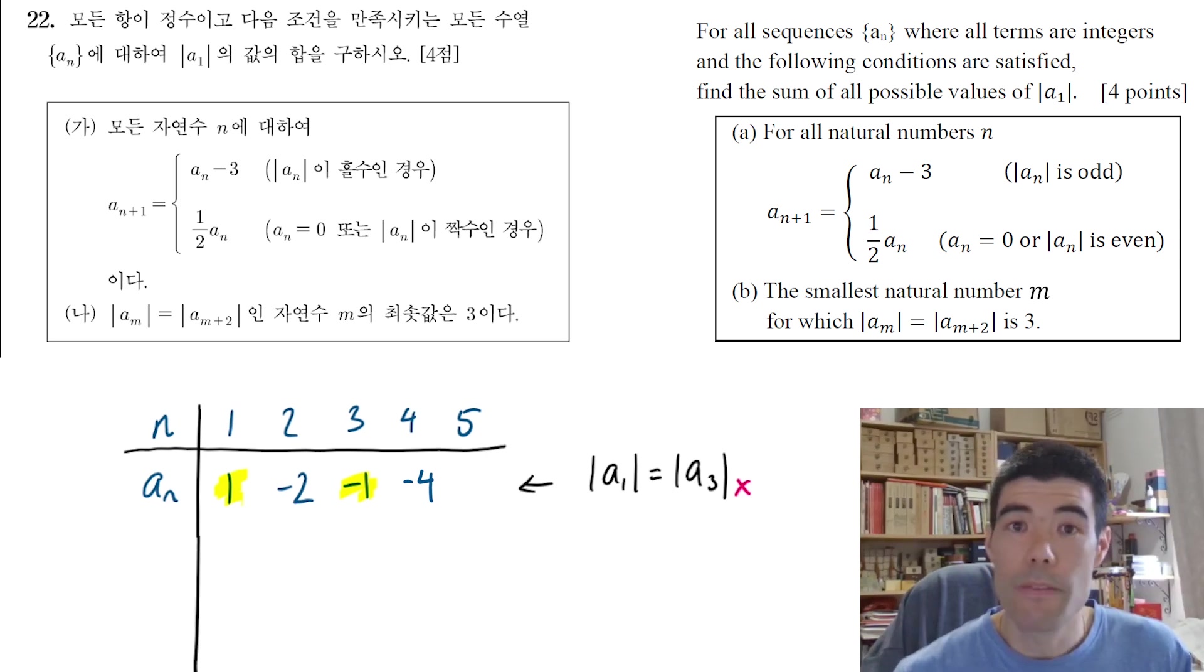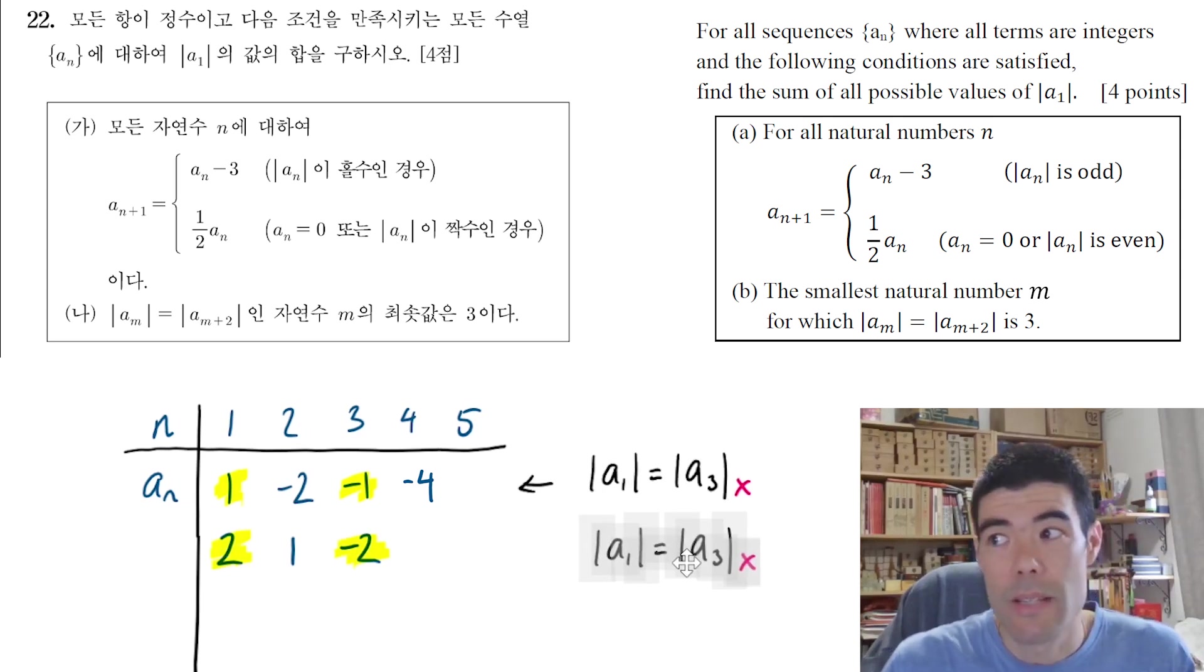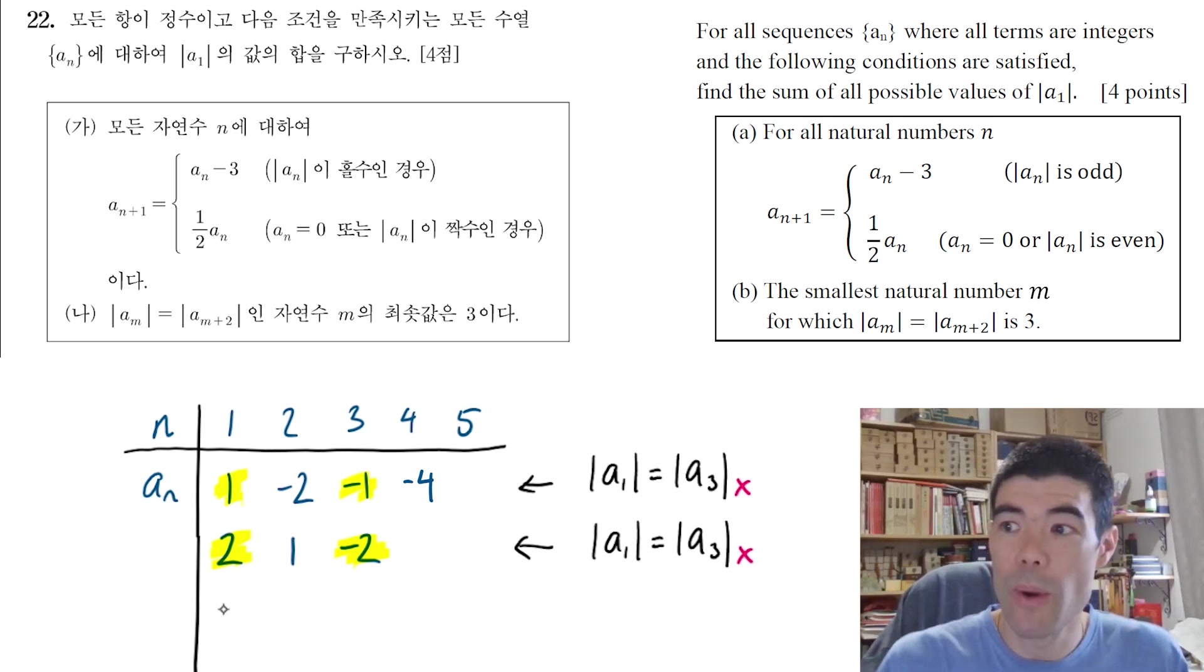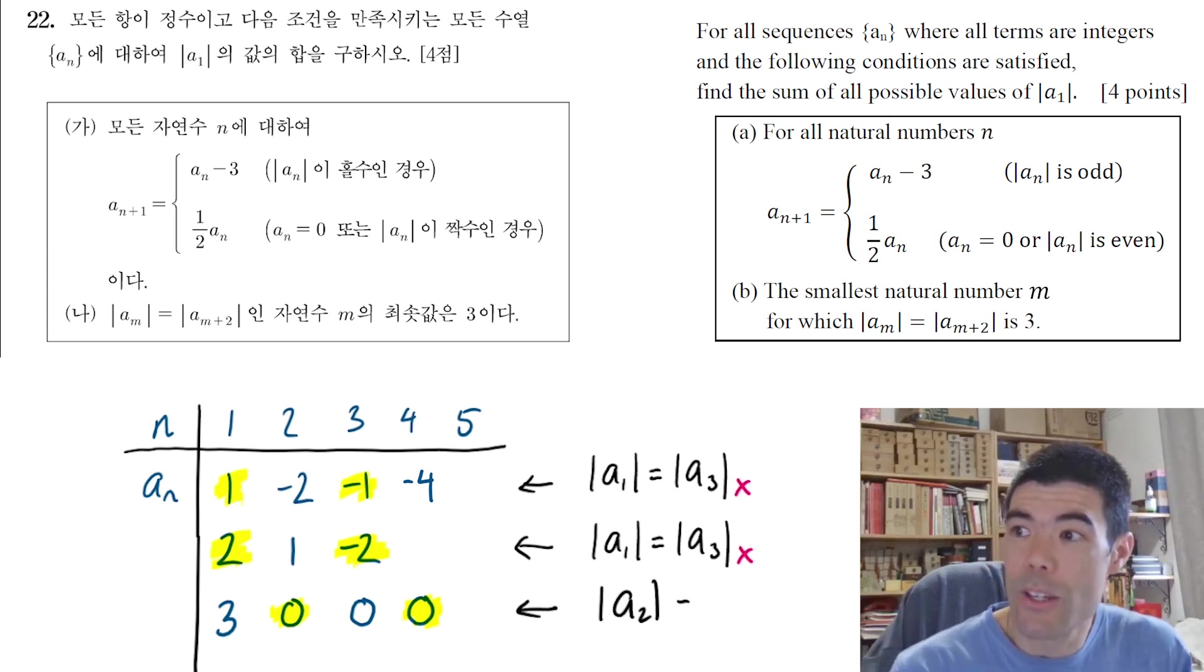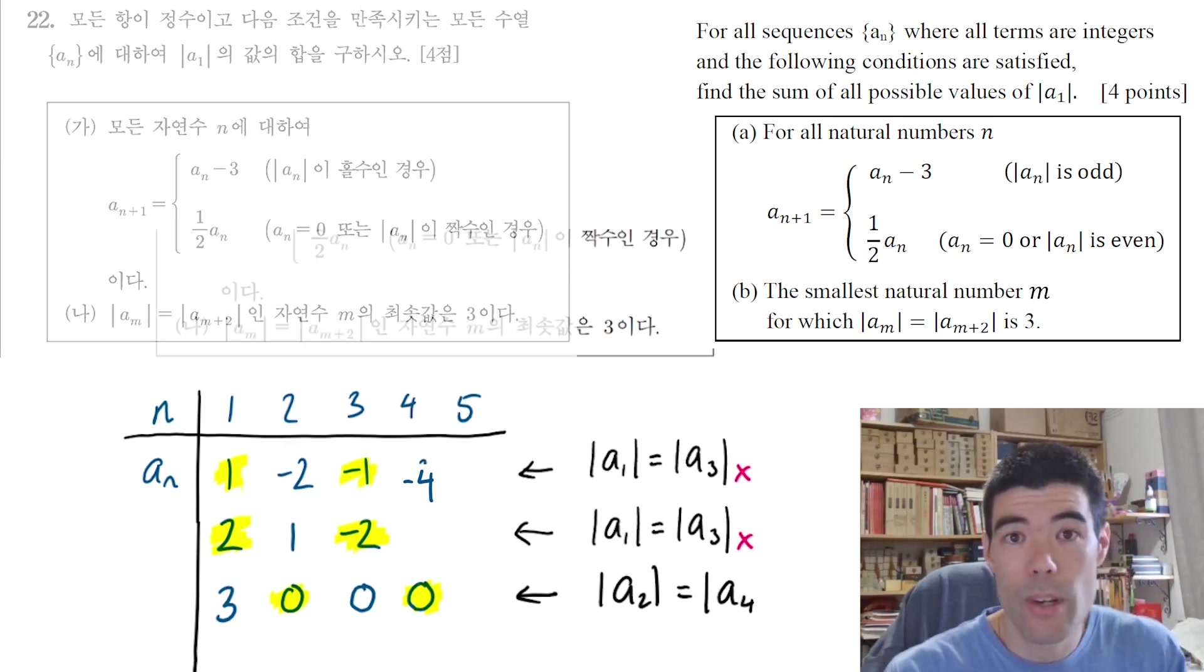So we'll move on and try something else. We need to find the sequences that do satisfy both conditions. So if we try a_1 = 2, for example, 2 is even, divide by 2 to get 1, subtract 3 to get negative 2. And again, we've got this problem where the size of a_1 is equal to the size of a_3. So we've failed already. Let's keep going. When a_1 is 3, it's odd. We subtract 3 to get 0. Okay, 0, divide by 2, 0, divide by 2, 0. We get a_2 is equal to a_4. This is not allowed to happen. So again, a_1 = 3 fails.